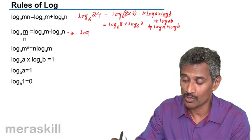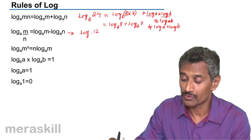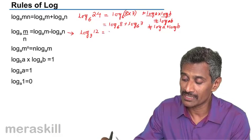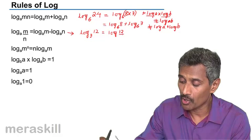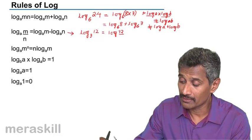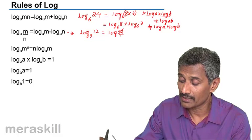For example, log of 12 to the base 3. This can be written as log of 12 upon... 12 can be written as maybe 36 by 3 to the base 3.